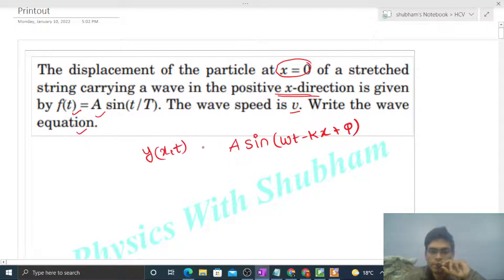Now, here what is given to us is at x equals zero, we have an equation. If you want to write this equation, then what do you need? You need amplitude, you need angular frequency, you need to know the value of k, and you need to know the value of φ.